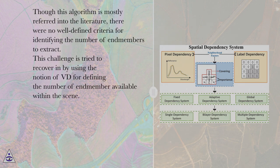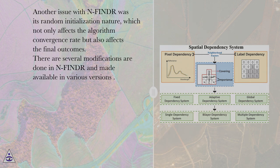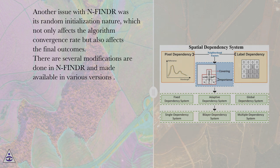Though this algorithm is mostly referenced in the literature, there were no well-defined criteria for identifying the number of N-members to extract. This challenge is addressed by using the notion of Virtual Dimensionality (VD) for defining the number of N-members available within the scene. Another issue with N-FINDR is its random initialization nature, which not only affects the algorithm convergence rate but also affects the final outcomes. Several modifications have been made to N-FINDR and are available in various versions.